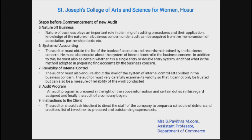Sixth, system of accounting — the auditor must obtain the list of books of accounts and records maintained by the business concern. They must also inquire about the system of internal control in the business concern. In addition, they must ascertain whether it is a single-entry or double-entry system and what method is adopted in preparing the final accounts by the business concern.